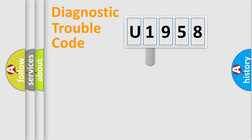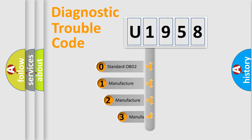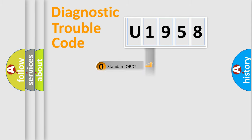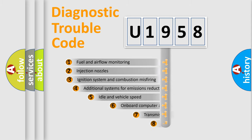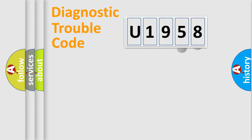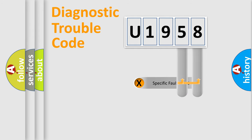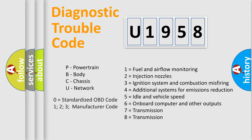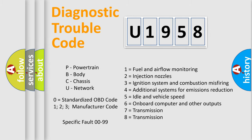This distribution is defined in the first character of the code. If the second character is expressed as zero, it is a standardized error. In the case of numbers 1, 2, or 3, it is a manufacturer-specific error expression. The third character specifies a subset of errors. This distribution is valid only for the standardized DTC code, and only the last two characters define the specific fault of the group.